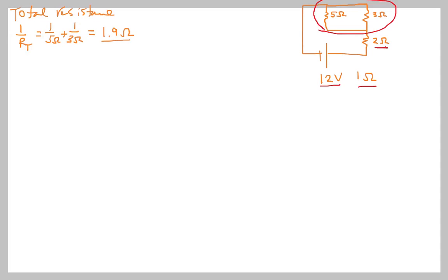Okay, so that's just the parallel branch. And then we have the resistance of this 2 ohm resistor plus the internal resistance of the battery, so the total resistance of the circuit. RT equals 1.9 plus 2 plus 1. Total resistance of the circuit is 4.9 ohms, and that is everything inclusive.